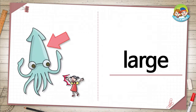The first word is large. In the picture, you see an arrow pointing to a squid. The squid is very large — it's much bigger than the girl. That's why the girl is shocked. Most squids are smaller than people. What animal is large?